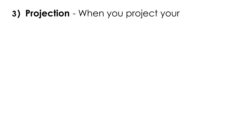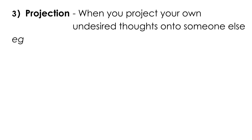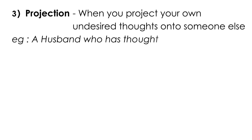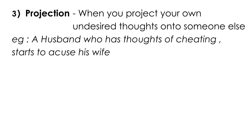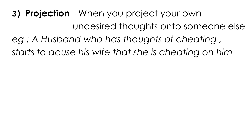The next primitive defense mechanism is projection, which is when someone projects their undesired thoughts onto someone else. A good example: a married man has thoughts of infidelity — he's thinking about cheating — but then he starts to accuse his wife of cheating on him. It's a classic scenario where a person has undesired thoughts and doesn't know how to cope with them, so he projects them onto someone else.